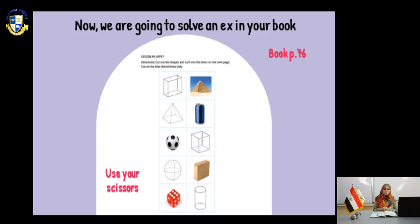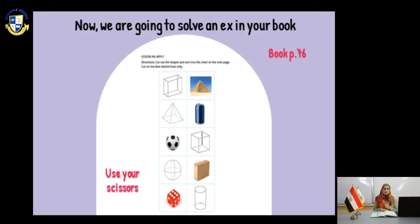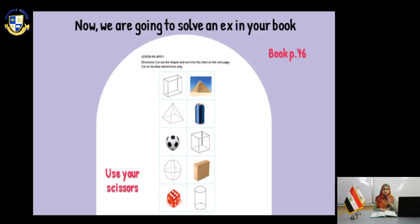In the next page, book page 76, cut all the shapes that you can see and put them next to the similar shapes in the next line. You have a cuboid or rectangular prism, a square-based pyramid, a sphere, and a dice. You can use your scissors to cut and paste. This is from your book page 76.